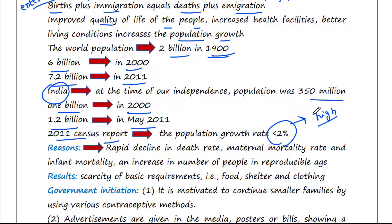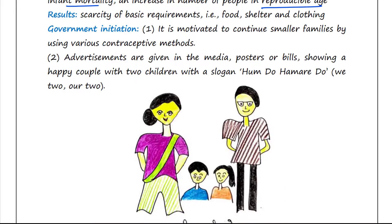A rapid decline in death rate, maternal mortality rate, and infant mortality rate, as well as an increase in the number of people in the reproducible age — these are the probable reasons for this. Such an alarming growth rate could lead to a scarcity of basic requirements like food, shelter and clothing.